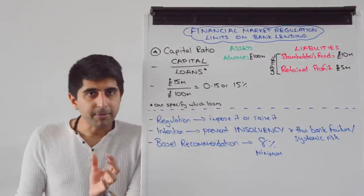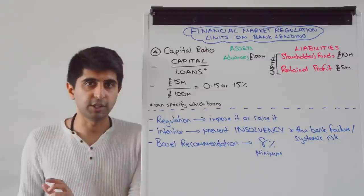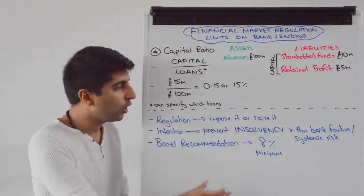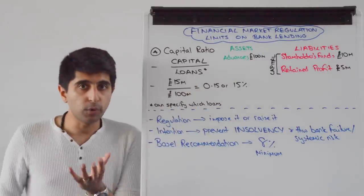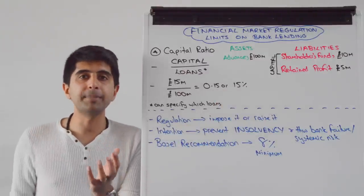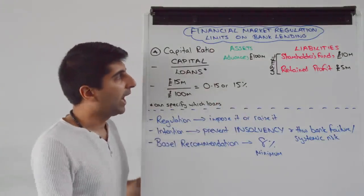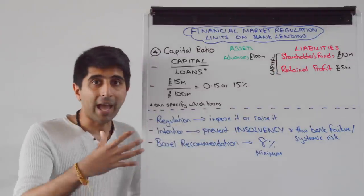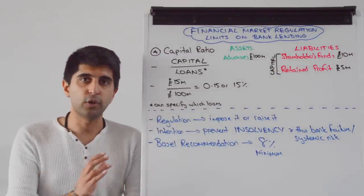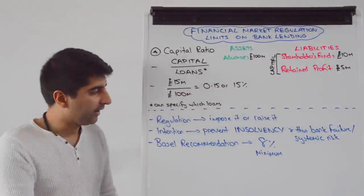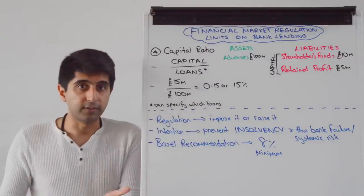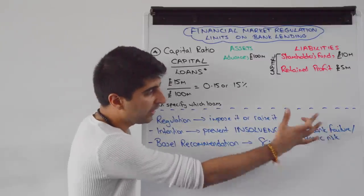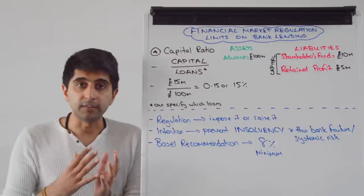The regulation can be to impose a capital ratio or to raise it. If you raise from 15% to 20%, it means more capital needs to be held by the commercial bank to protect against any potential losses in loan value — at least £20 million worth of capital. The intention is clearly to protect against insolvency, whereby a bank doesn't have enough capital to offset the value of any losses in loans, and therefore to protect against that type of bank failure and potential systemic risk.